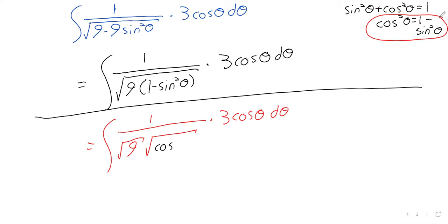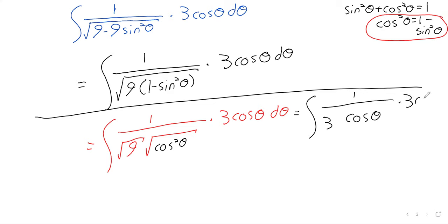There are some details I'm going to wave my hand over — the square root of the cosine squared isn't just the cosine; technically we should get an absolute value. But for technical reasons we're not going to worry about here, the square root of 9 is 3, and the square and the square root cancel each other out. And the magic trick has worked.